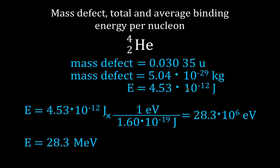But we often want to know the binding energy per nucleon. Well, there are four nucleons — that's helium-4, two protons and two neutrons — so we simply divide by four. And we get that the average binding energy per nucleon is 7.08 mega electron volts.